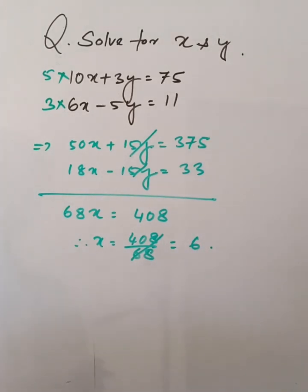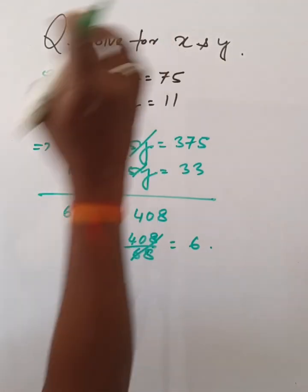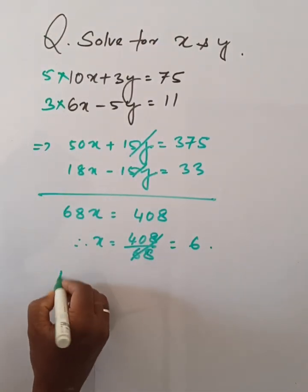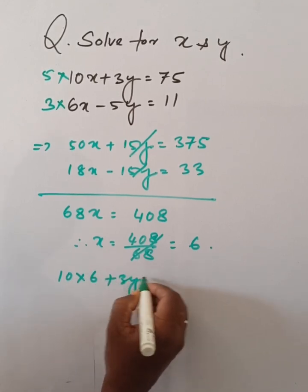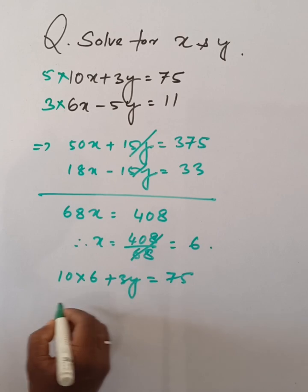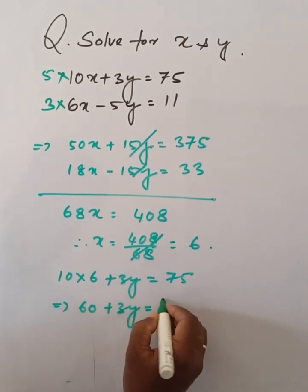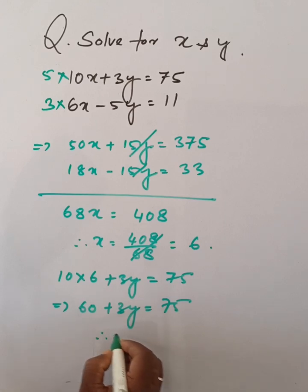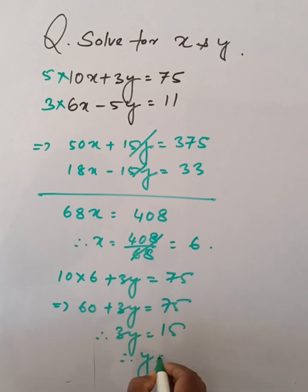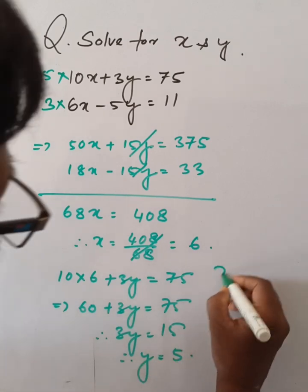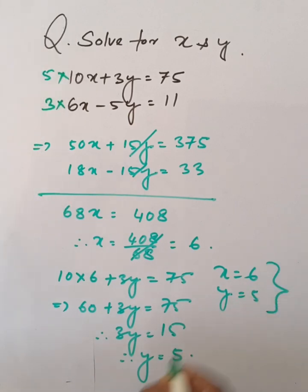Now x is 6. Keeping this value in equation 1, that is 10 into 6 plus 3y is equal to 75. So 60 plus 3y is equal to 75, then 3y is equal to 15, therefore y is equal to 5. x is equal to 6, y is equal to 5 are the answers.